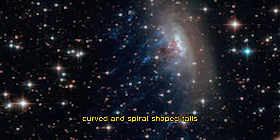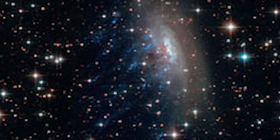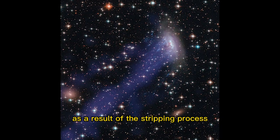There are various types of tails found in jellyfish galaxies, including straight, curved, and spiral-shaped tails depending on the nature of the interactions with the intracluster medium. The tails can also have a complex structure with multiple filaments and knots of gas and dust.